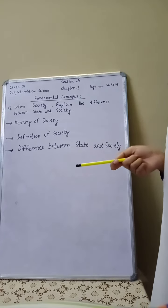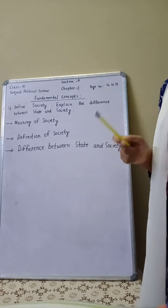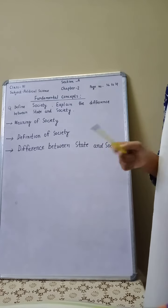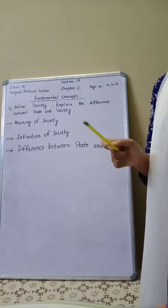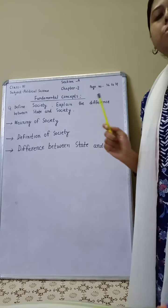Fifth difference is, society is concerned with both internal and external dimensions of human behavior. On the other hand, state is concerned only with the external dimension of human behavior.